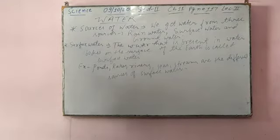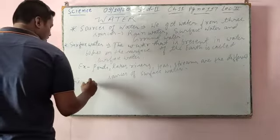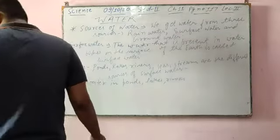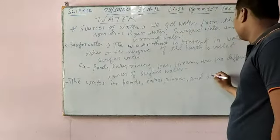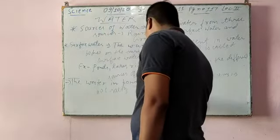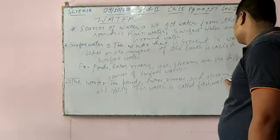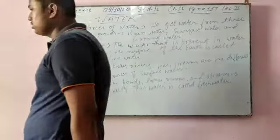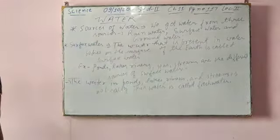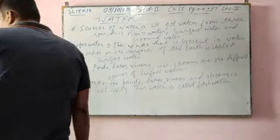Water in ponds, lakes, rivers, and streams is not salty. This water is called fresh water. Sea water, on the other hand, is known as salty water. But the water in ponds, lakes, rivers, and streams is not salty — this water is called fresh water.